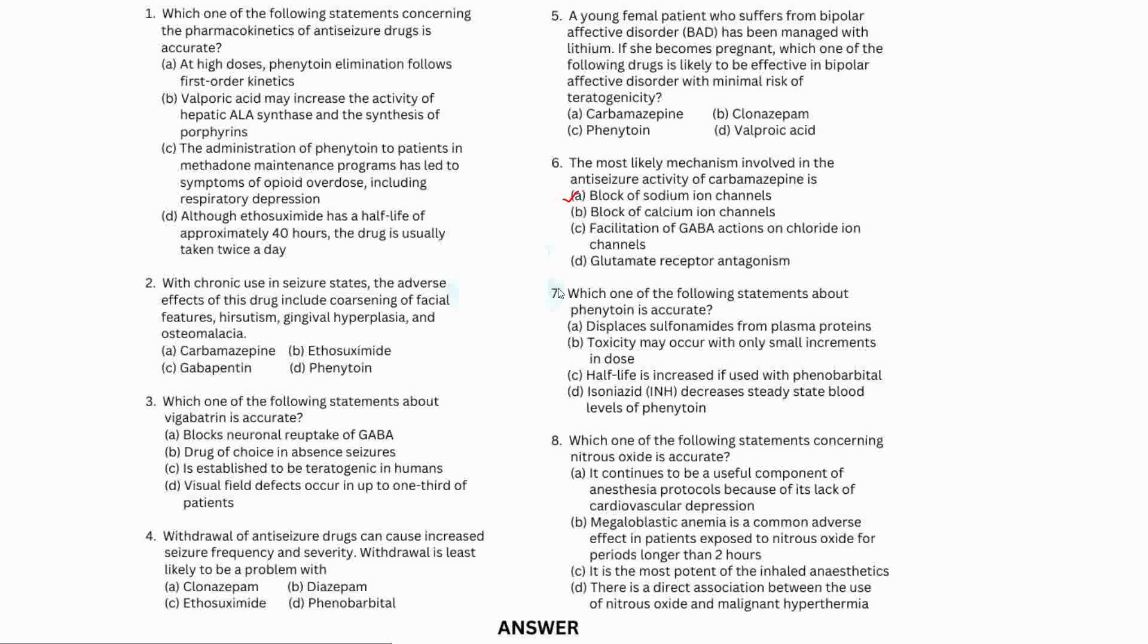Seventh question: Which of the following statements about phenytoin is correct? Phenytoin displaces sulfonamides from plasma proteins. Toxicity may occur with only small increments in dose - this is accurate because a small dose increase can cause toxicity. Half-life increases if we use phenobarbital. Isoniazid decreases steady-state blood levels of phenytoin. Option B is the correct answer.